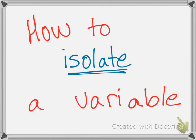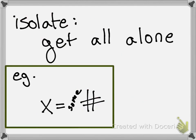So here's how to isolate a variable. This is a word, a phrase you're going to hear a lot. Isolate means to get all alone. For example, having x equals some number is isolating the variable. Having x equals some number means we got x all alone. We isolated the variable.